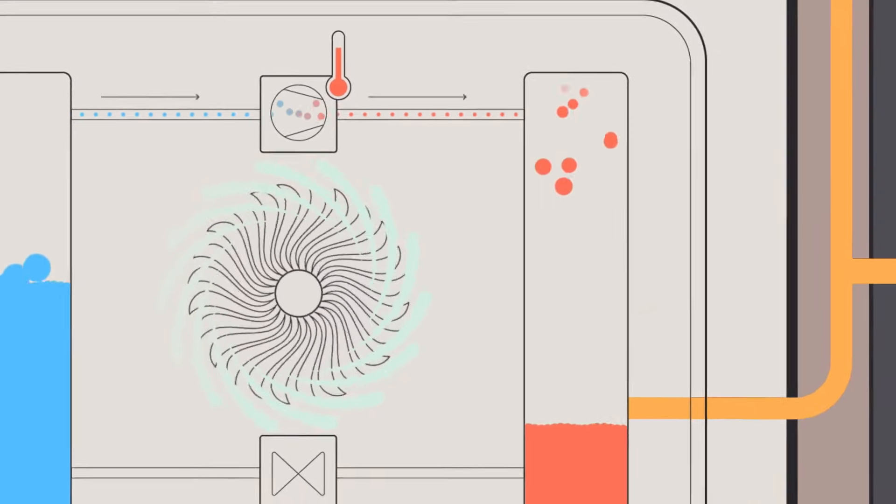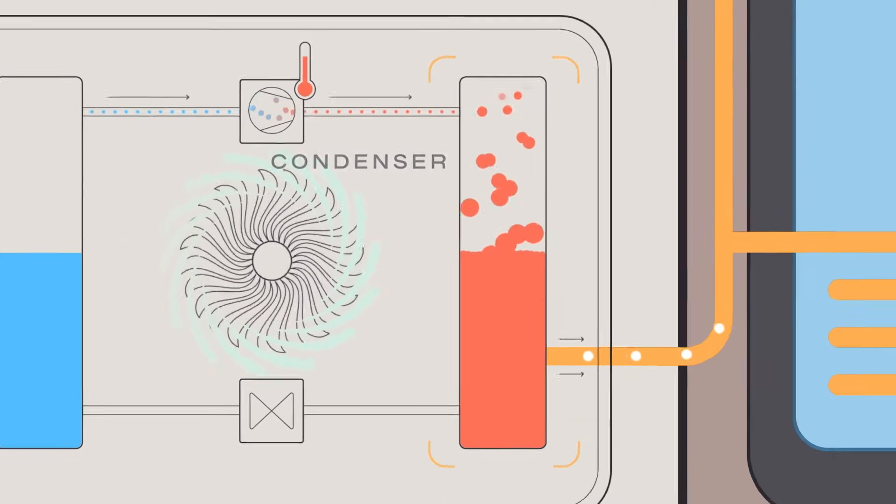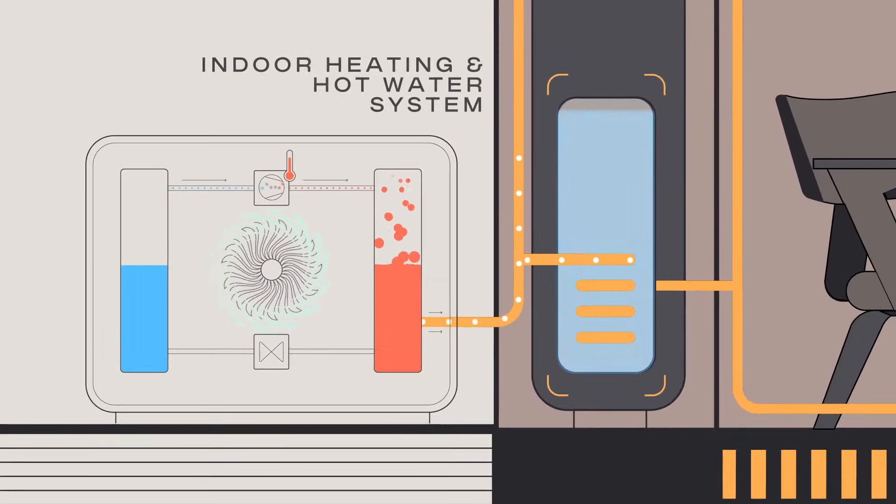The hot gas then passes through a condenser, where it turns into liquid again, and releases its absorbed energy into the heating and hot water system.